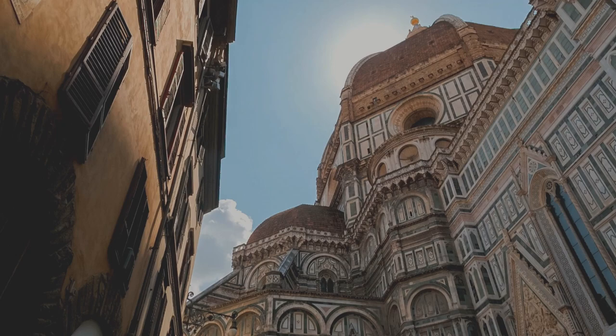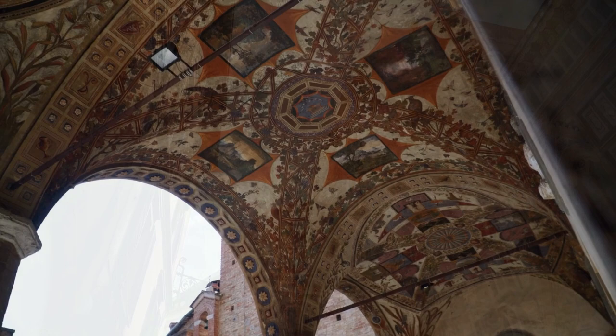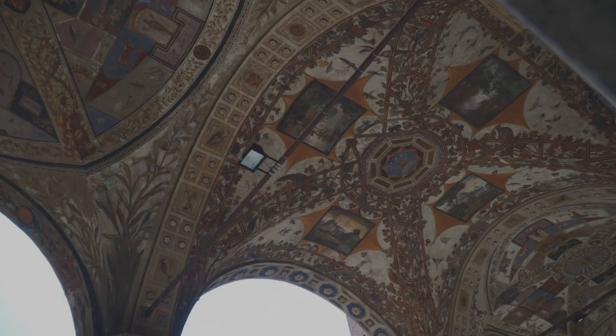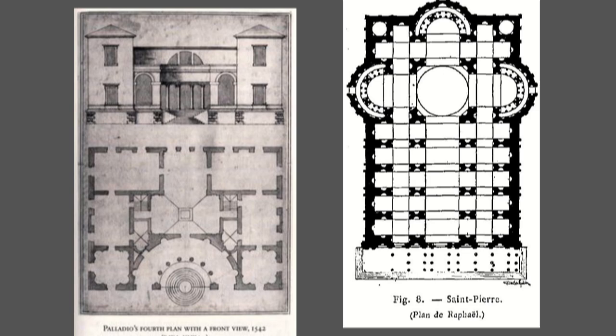Much of our knowledge of ancient architecture and engineering comes from much later on in history, during the Renaissance period. Prior to this time, architectural drawings were rare. Even during the Middle Ages, the concept of scale in architecture was relatively unknown. These drawings were a guide, but not necessarily an exact science. Still, breakthroughs were made.